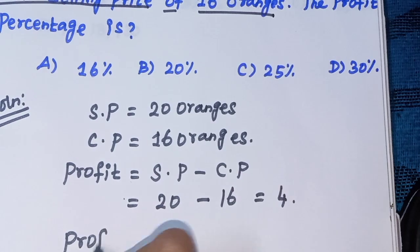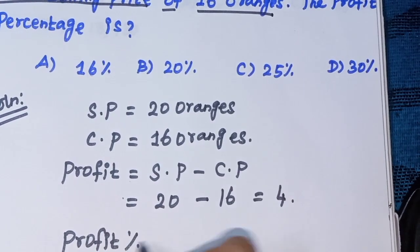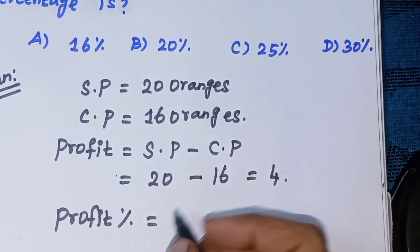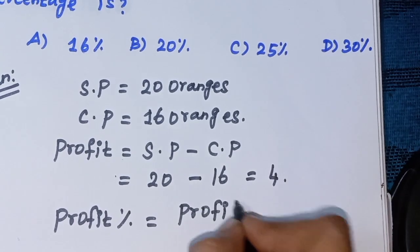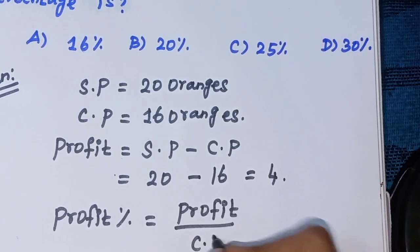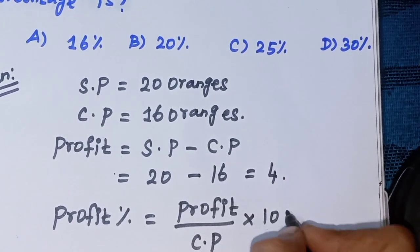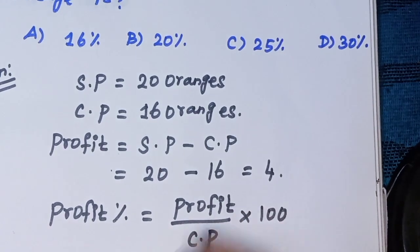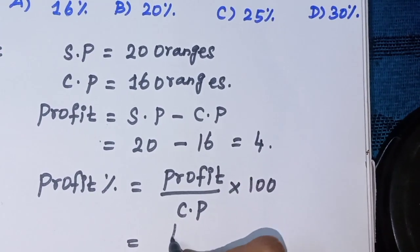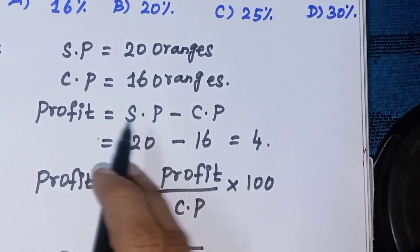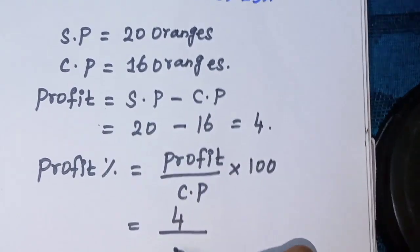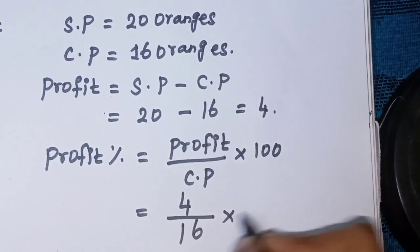Profit percentage formula: profit divided by cost price times 100. So profit is 4, substitute into the formula. 4 divided by cost price 16, so 4 divided by 16 times 100.